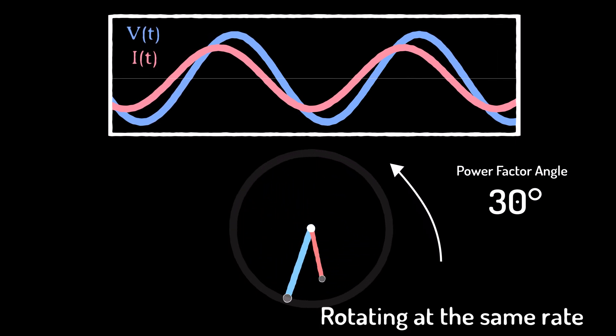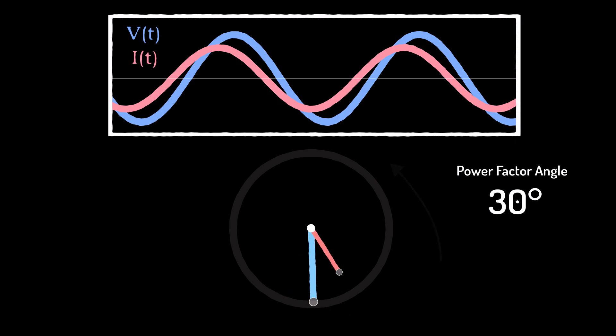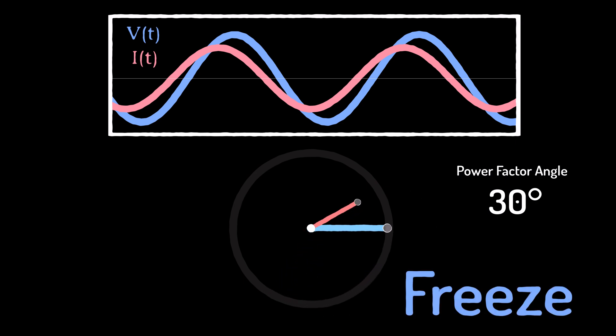We can even go one step further and make the assumption that we have a steady state condition, meaning the phasors are rotating at the same rate. In this case, we can simplify by removing the rotating part, essentially freezing the phasors in one place.